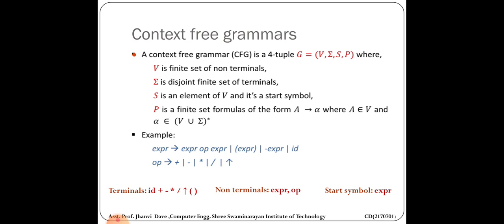Here your terminals are: id, plus, minus, division, multiplication, power, opening bracket, and closing bracket. Your non-terminals are expr and op. Remember, non-terminals will always be in capital letters generally. For every non-terminal or variable, there will always be a production rule generated — so for expr there is a production rule, and since op appears inside it, there is also a production rule for op.